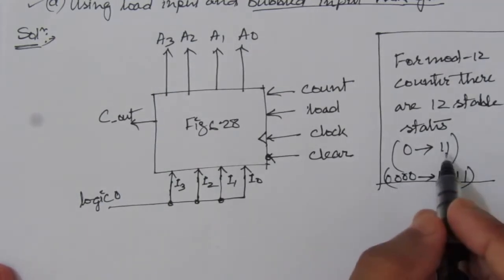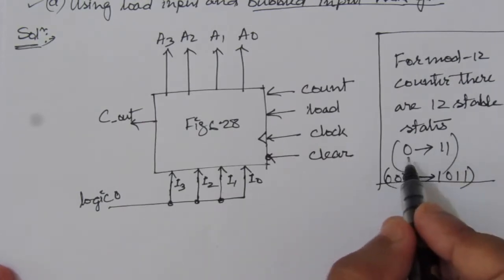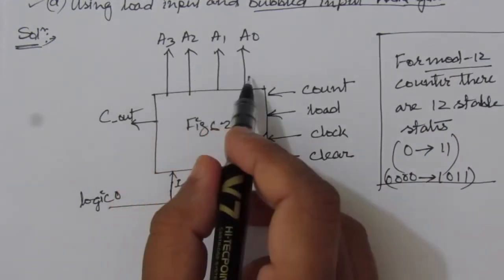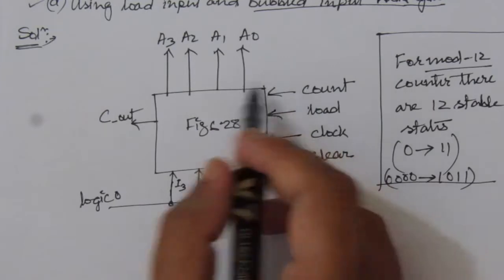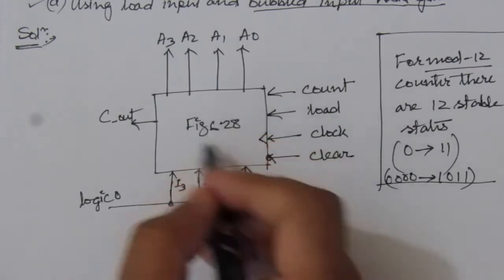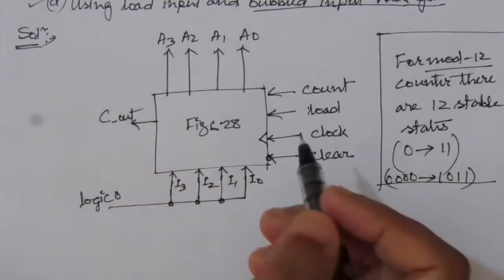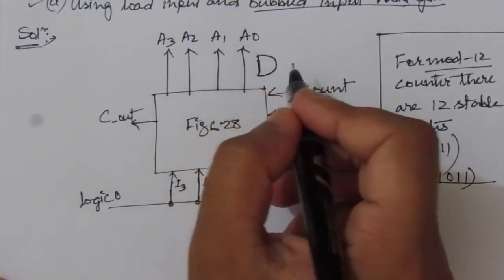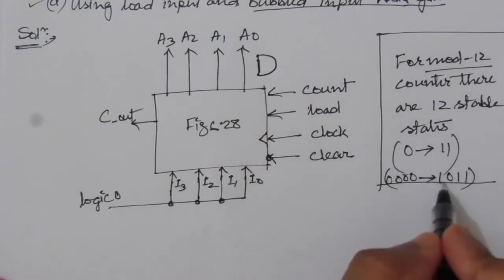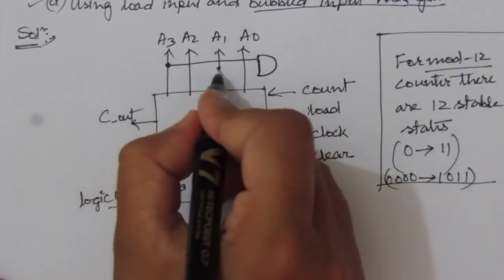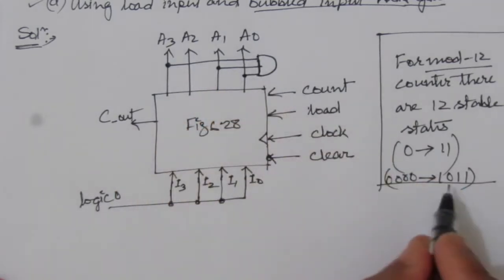Whenever we have 11, we have to go back to 0, because it is a mode 12 counter we have to design. So whenever we have 1011 at these outputs, we have to make load high so that all these 0 inputs are entered into the circuit and this circuit will next go to 0000. What we will do is use an AND gate, and connect all the 1 values: A3, A1, and A0, because these are the 1 values in 1011.